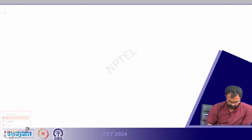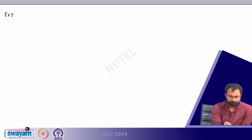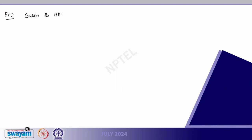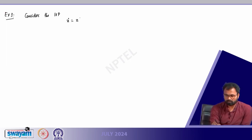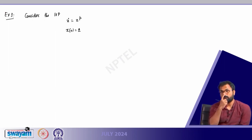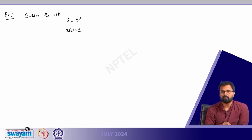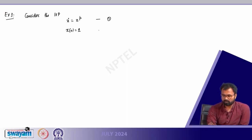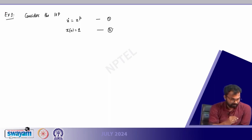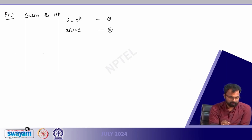Example 1: Consider the initial value problem x-dot equals x to the power p, and x at 0 equals 1. This is a scalar equation, so we do not have x1, x2, x3 and so on. Here p is any integer greater than or equal to 0 for the time being. The scalar field is autonomous and therefore the domain is not relevant. For any integer p greater than or equal to 0, we have omega equals R.